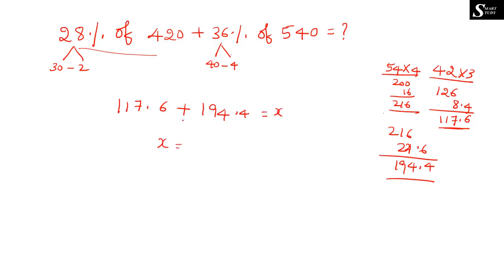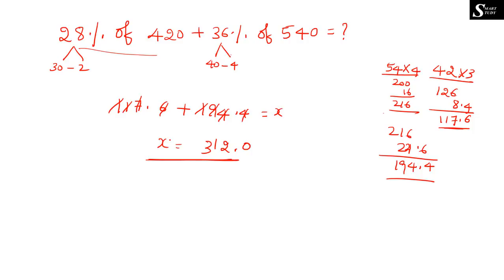So x = 117.6 + 194.4. Adding these: 6 + 4 = 10, carry 1; 7 + 4 + 1 = 12, carry 1; 1 + 9 + 1 = 11, carry 1; 1 + 1 + 1 = 3. So the answer for this question is 312.